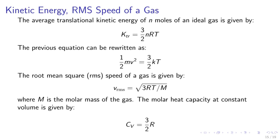Kinetic energy and RMS speed of a gas. Average translational kinetic energy of n moles of an ideal gas is given by Ktr equals 1.5 nRT. The previous equation may be written as 1.5 mv squared equals 1.5 kT. The root mean squared speed of a gas is given by Vrms equals square root of 3RT over m, where m is the molar mass of the gas. The molar heat capacity is also given by Cv equals 1.5 r.